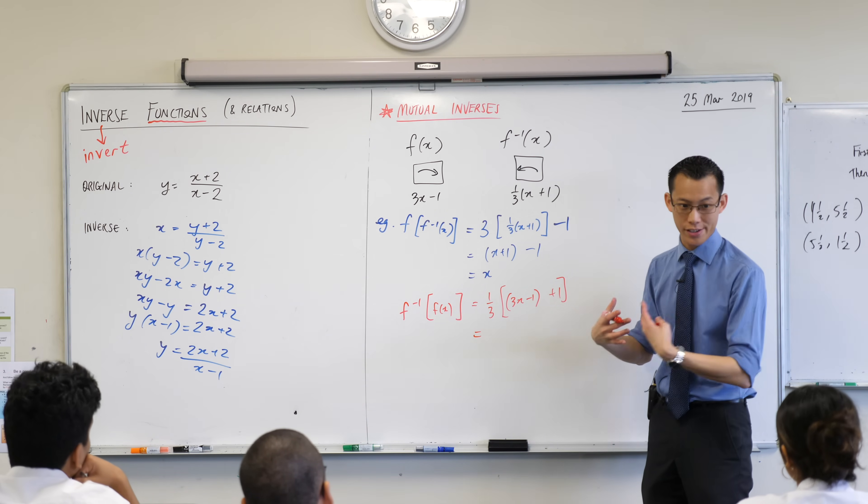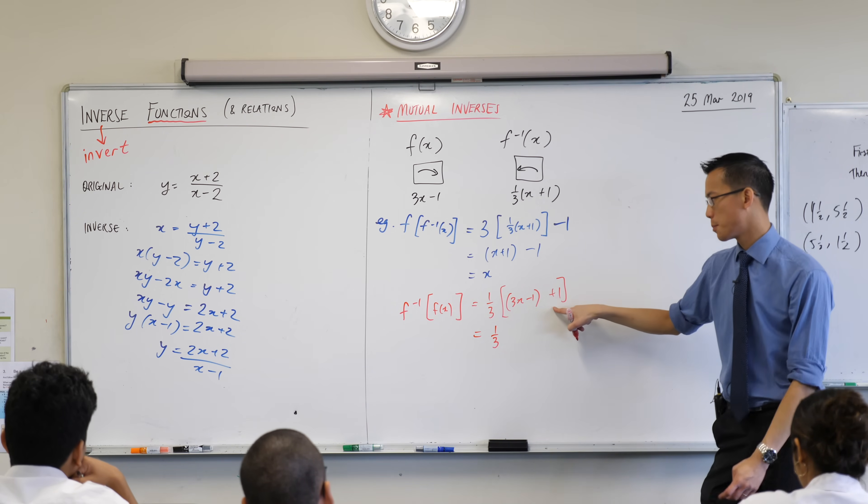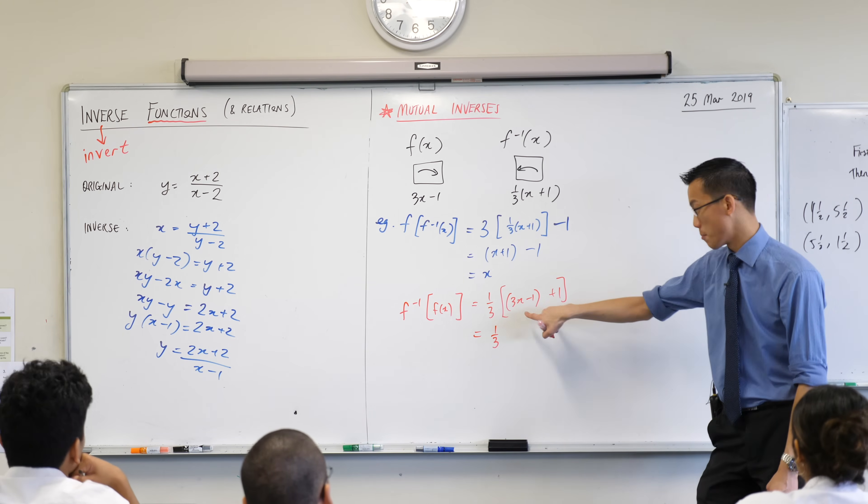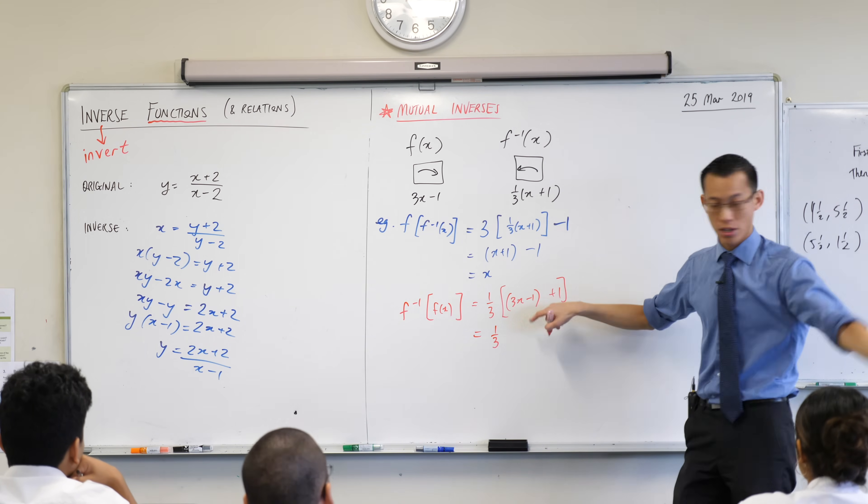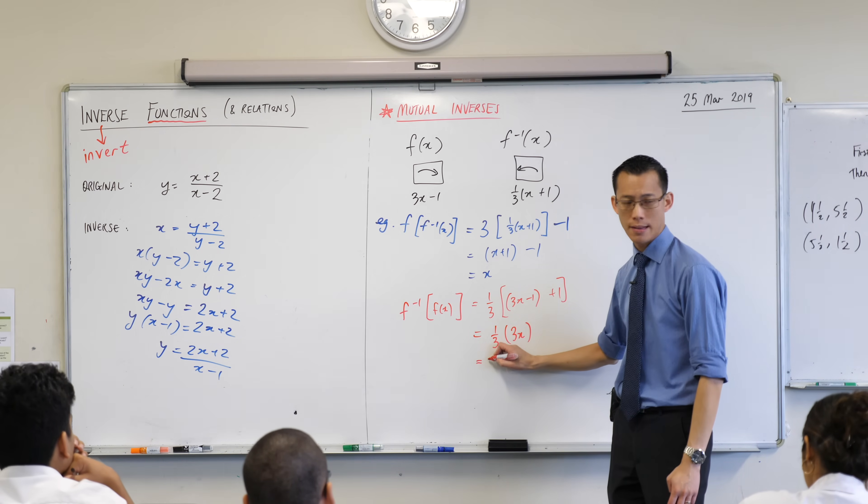if I just start to simplify on autopilot, what I normally do, what happens inside the brackets? Three x minus one. You just get the minus one and the plus one cancel each other out, so you get three x in here, and then you're like, wait a second, that's just x again. X again.